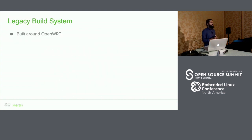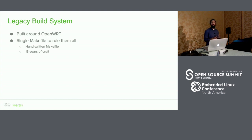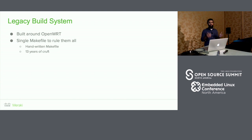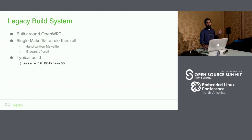This legacy build system is built around an old checkout of OpenWRT, and we have a single makefile orchestrating the whole build. This makefile is handwritten — and that's never a good idea — it has 13 years of cruft in it with people adding their changes however they want. A typical build looks something like this: you specify the product you want to build for and invoke make in that directory.